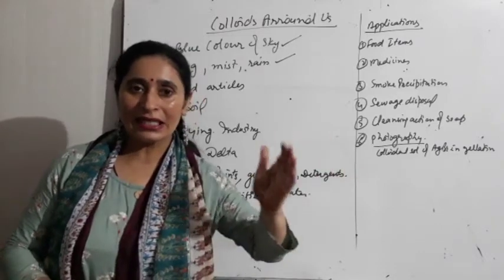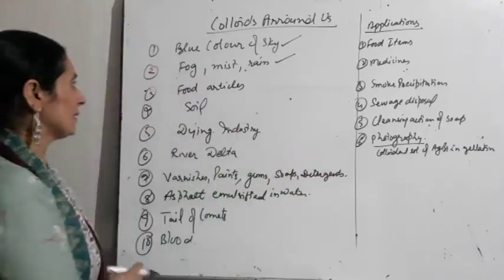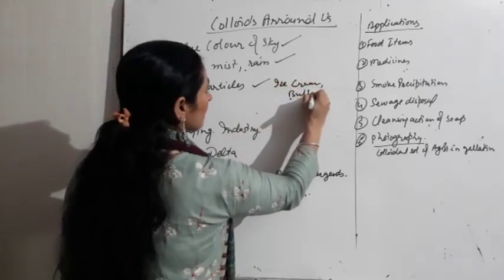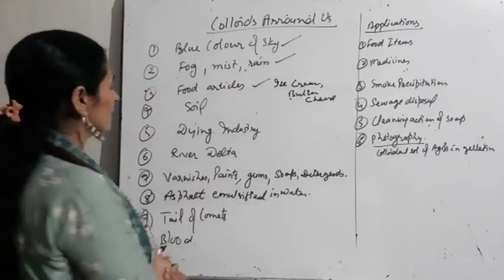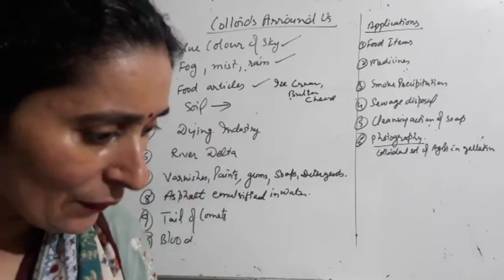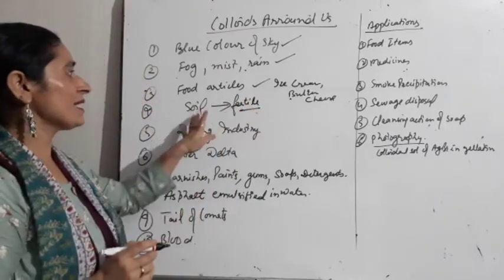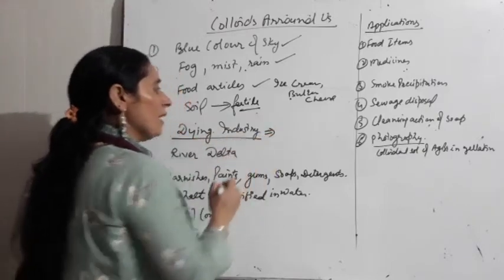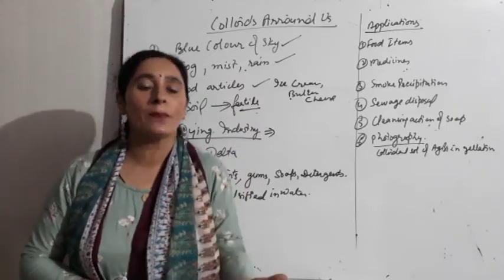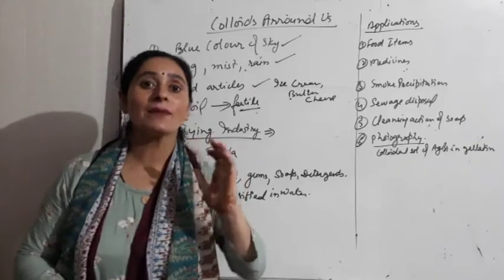Mist — jitne bhi insecticides hain, wo in the form of mist humein dikhai dete hain. Jitni bhi food articles hain — like ice cream, butter, cheese — saare colloidal solutions hain. Soil ke andar bahut saare components hain — soil contains many components — aur fertile soil bhi colloidal nature ki hoti hai, usi wajah se uski fertility maintain hoti hai. Dyeing industry — kapdon pe alag-alag colors aate hain due to absorption by colloidal solutions — dyes are absorbed.